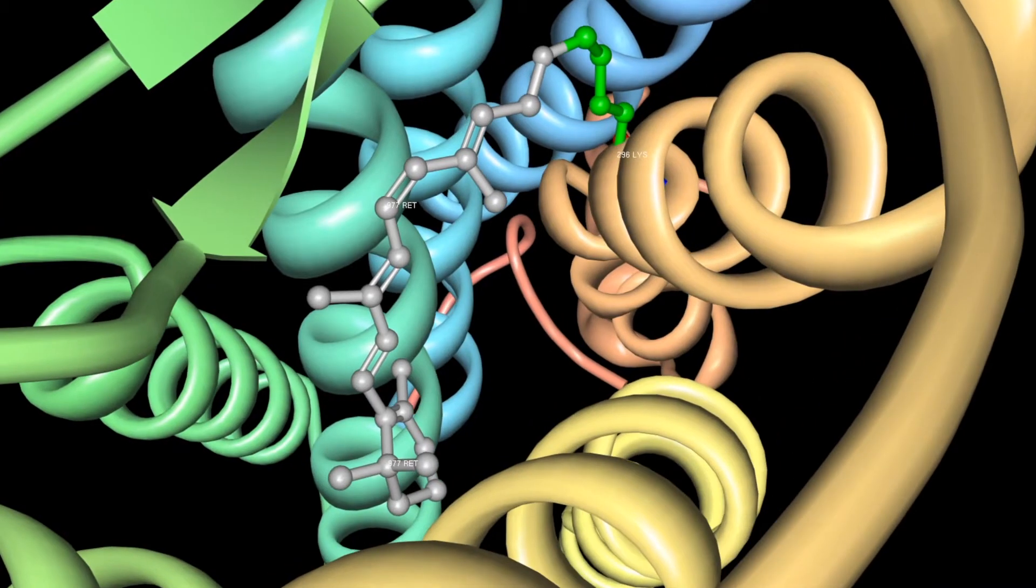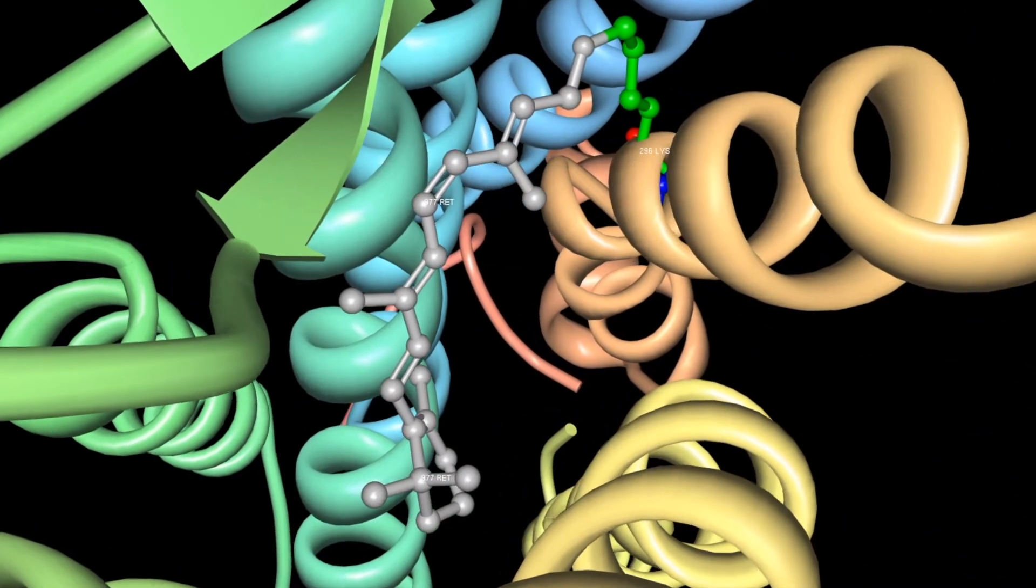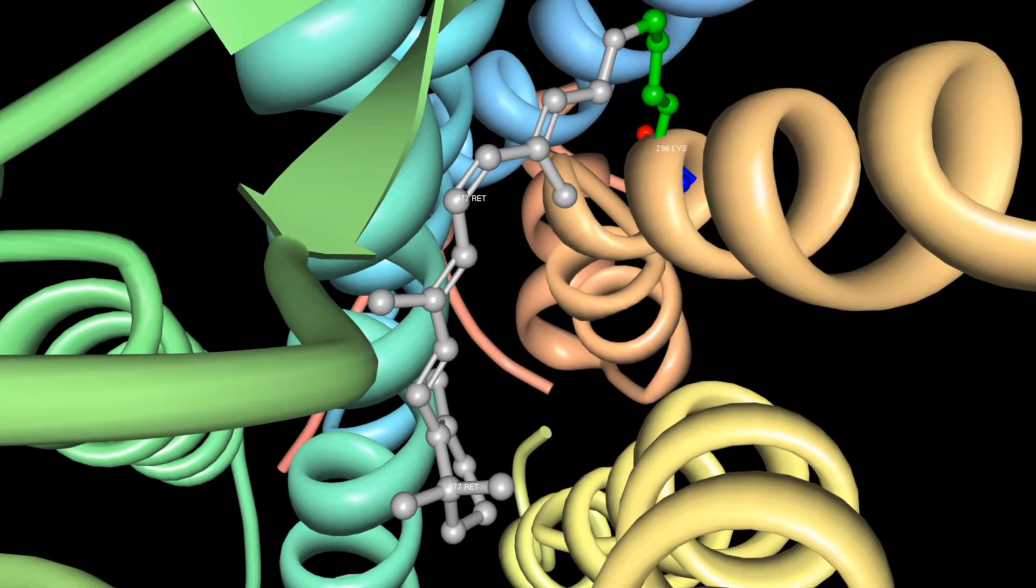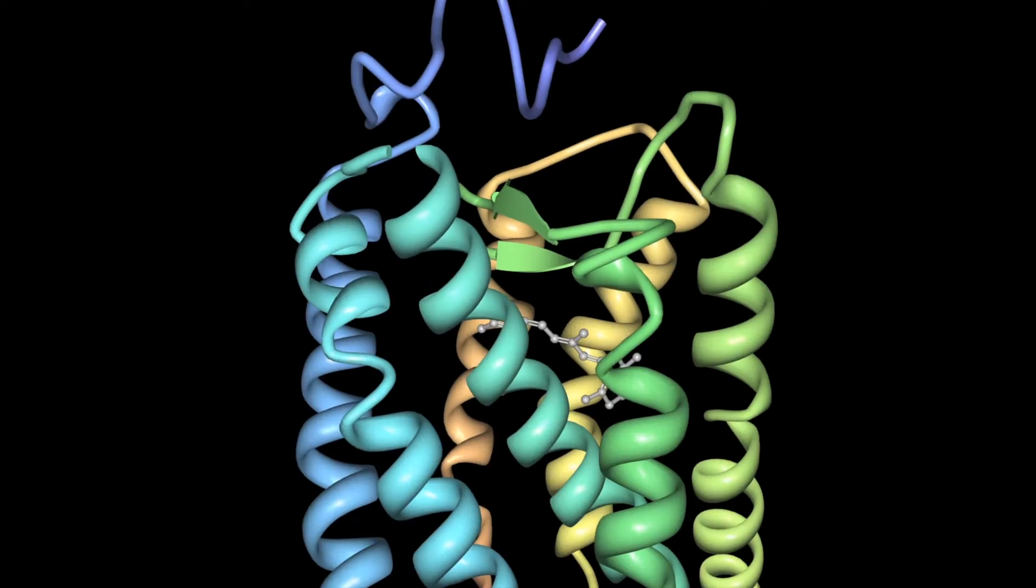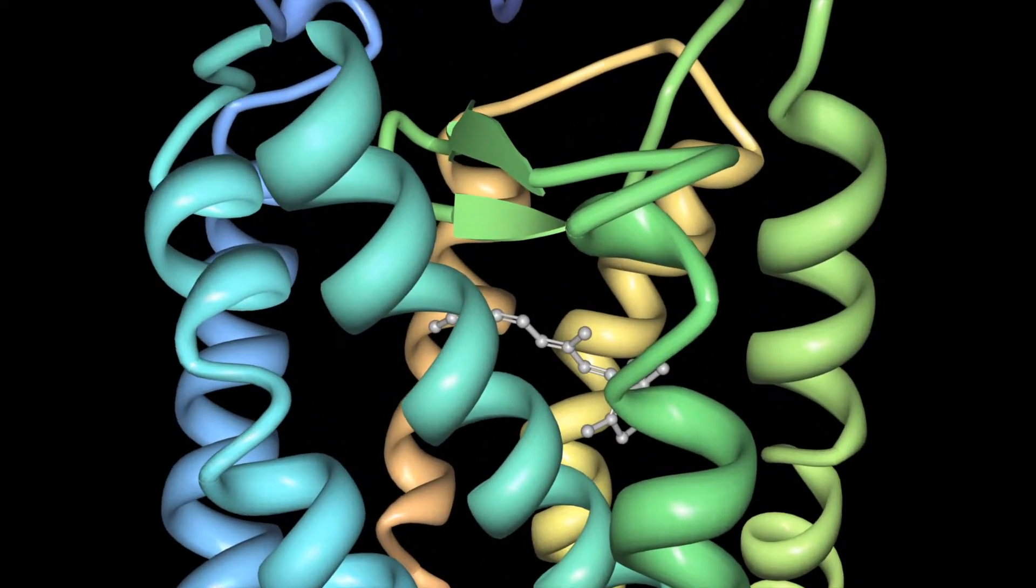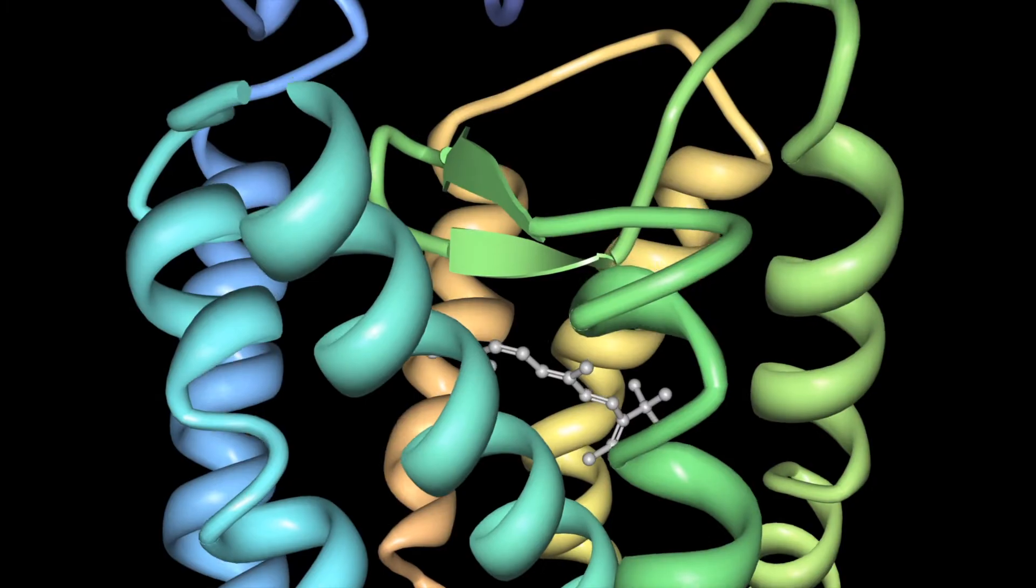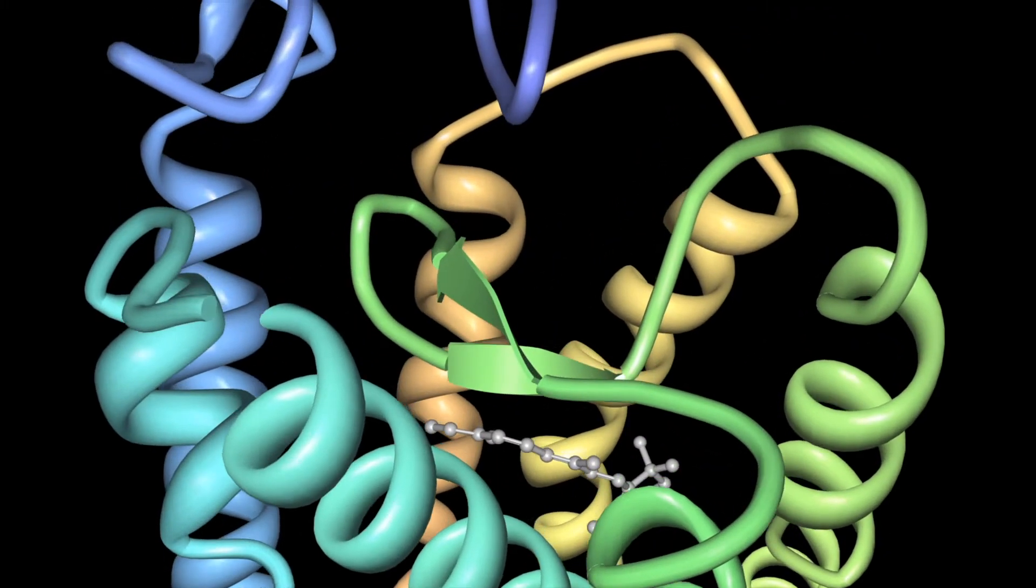The retinal ligand is bound to the opsin core through a Schiff-base interaction with lysine-296. The second loop on the extracellular side of the protein is particularly important for the binding of retinal. This region folds into two beta sheets, stabilized by a disulfide bond between cysteine-110 and cysteine-187.